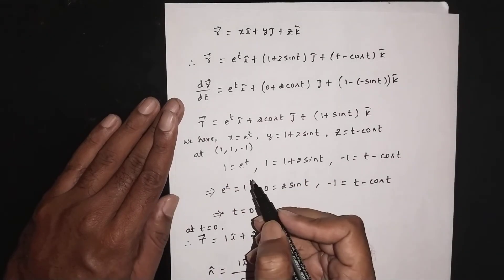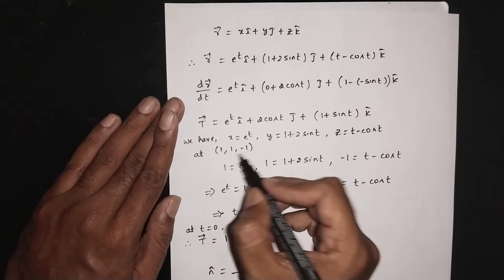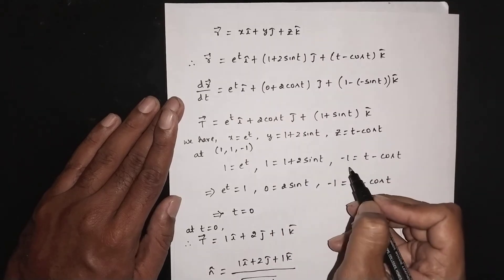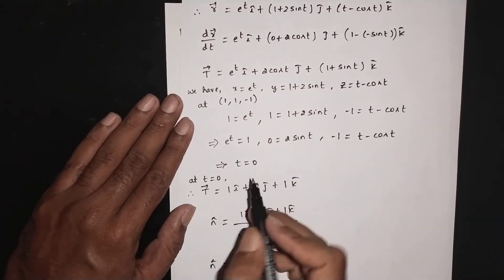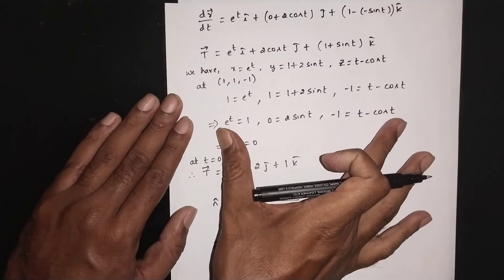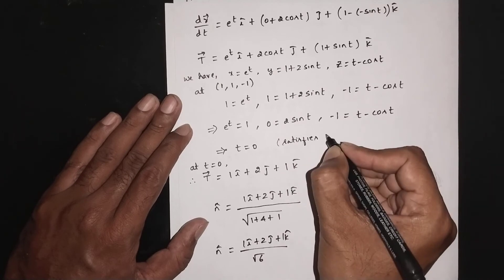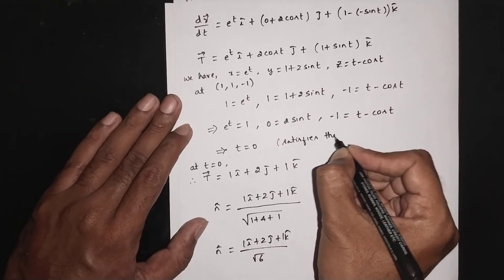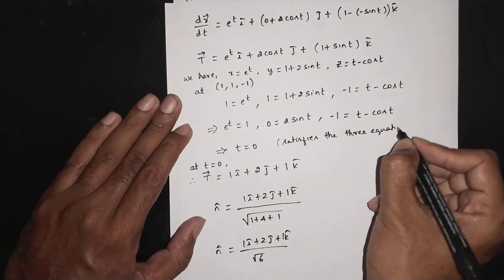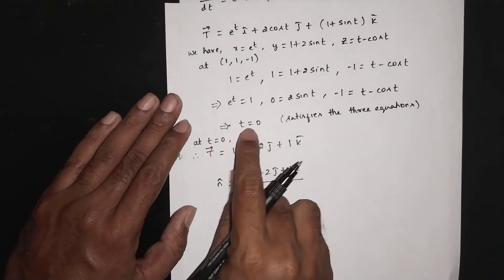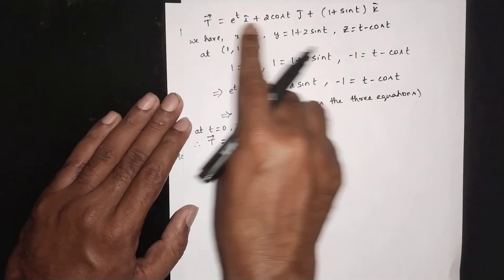At (1, 1, -1): x gives e^(4t) = 1; y gives 1 + 2sin(t) = 1; z gives t - cos(t) = -1. This implies e^(4t) = 1, 0 = 2sin(t), so t = 0 satisfies all three equations. t = 0 lies between -1 and 2.